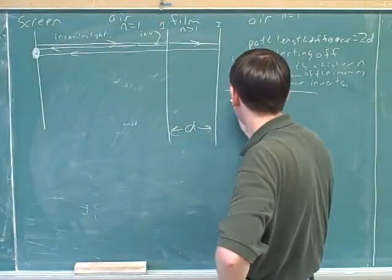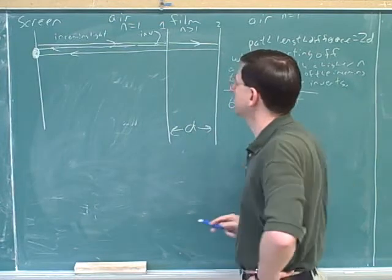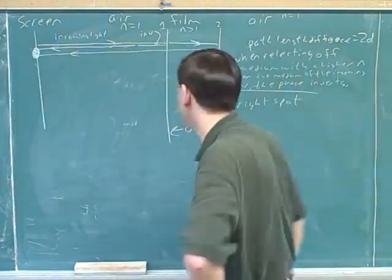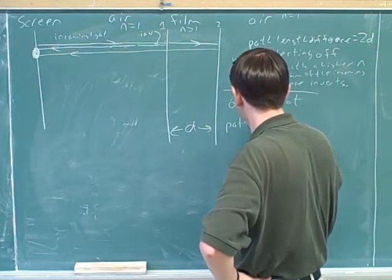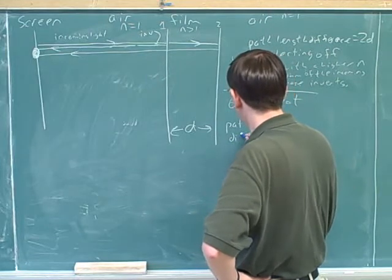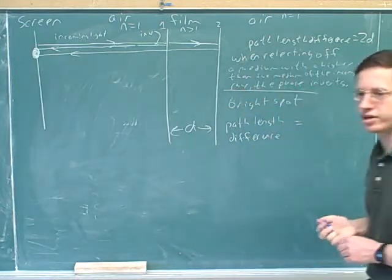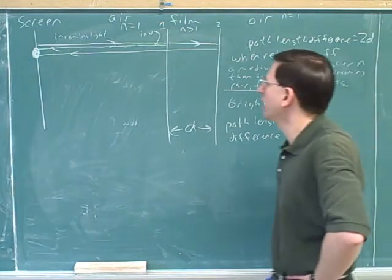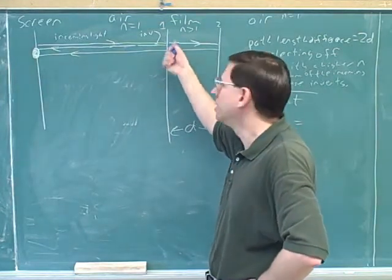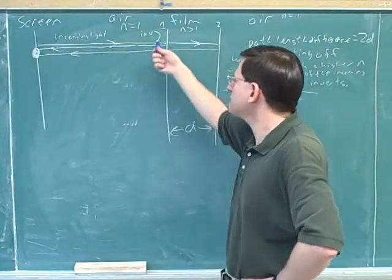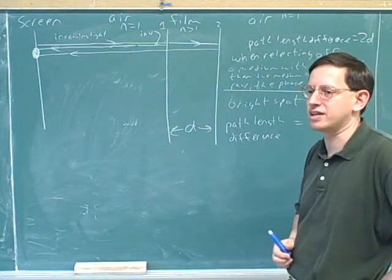What we'd like to figure out is how to get a bright spot — constructive interference. We want constructive interference between these two rays when they hit over here. We have to figure out how big the path length difference has to be to get constructive interference between these two things. If we just think about the inversion, they're out of phase.